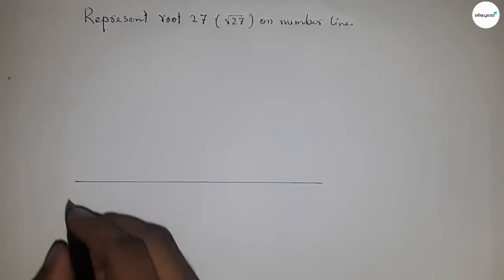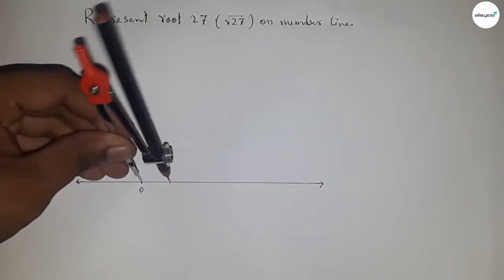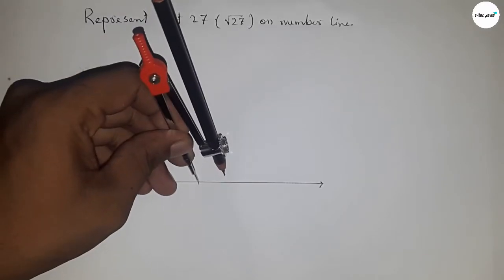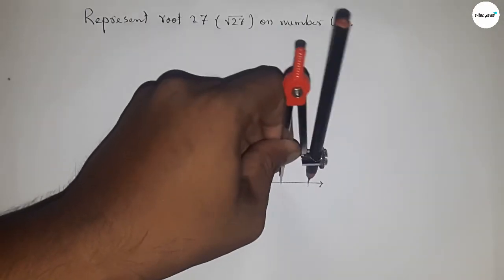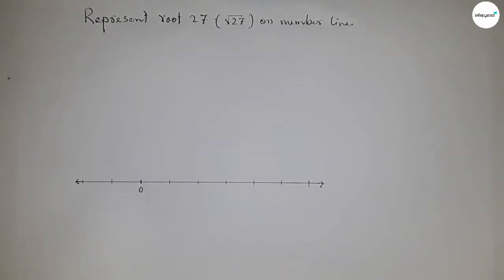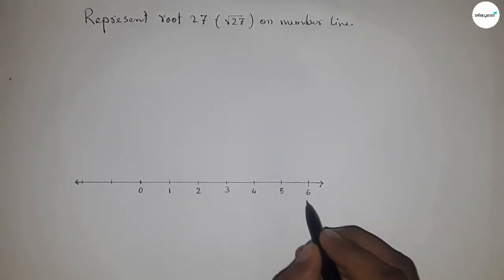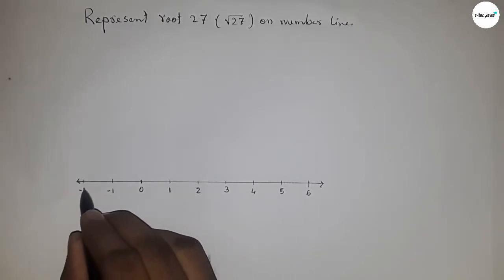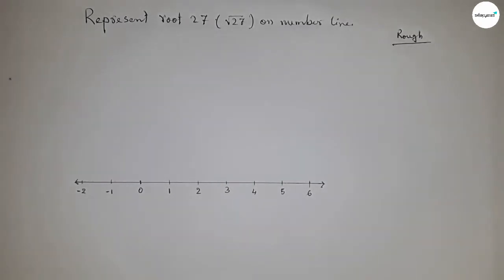First, draw a line of any length and mark the ends with arrows. Take zero as the starting point. Using a compass, mark equal unit lengths along the line. This length is called unit length or one unit. Mark points: one, two, three, four, five, six, and so on, and on the other side minus one, minus two, and so on.